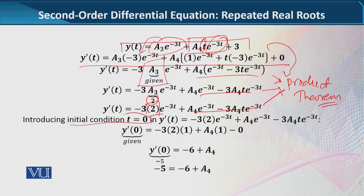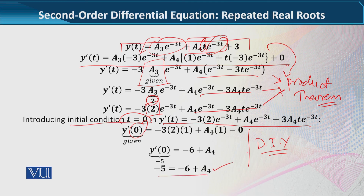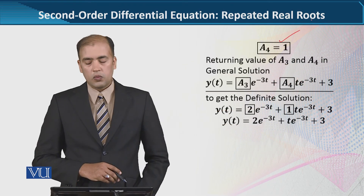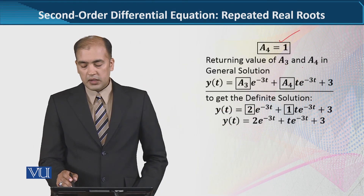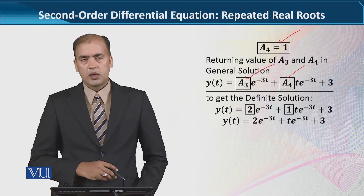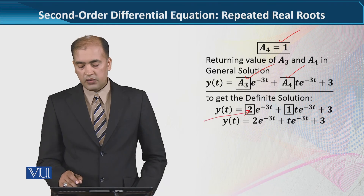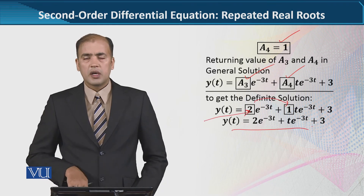Initial condition کے لیے t کی جگہ 0 لگانا ہے، کیونکہ اب ہمارے پاس y'(t) کی form develop ہو چکی ہے۔ آپ دیکھ سکتے ہیں میں نے encircle کیا ہوا ہے ان areas کو - t کی جگہ 0 لگانے سے a4 = 1 آتا ہے۔ a3 = 2 اور a4 = 1 دونوں values مل گئیں، which means ہم definite solution note کر سکتے ہیں۔